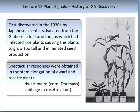Plants with GA showed excessive stem elongation. Other experiments conducted on corn showed that dwarf plants exposed to gibberellic acid had increased stem elongation, resulting in tall-looking plants. The illustration on the slide demonstrates this.